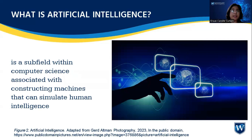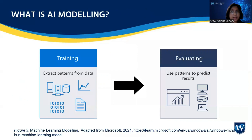So before we start, let us define what artificial intelligence or AI is. AI is a subfield within computer science associated with constructing machines that can simulate human intelligence. AI modeling is a subset of AI that trains and extracts different patterns of data that can increase the accuracy and predictability of results. When used in healthcare, we aim to assist medical doctors or anyone that provides diagnoses to solve health diagnostics, especially when faced with tricky healthcare conditions.